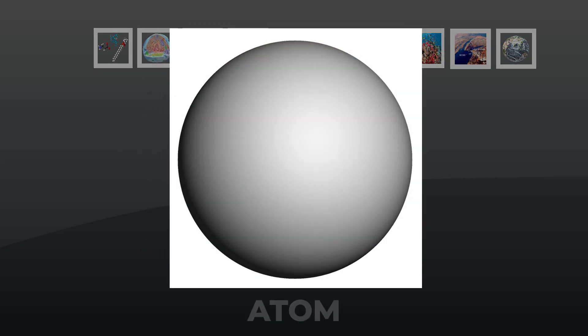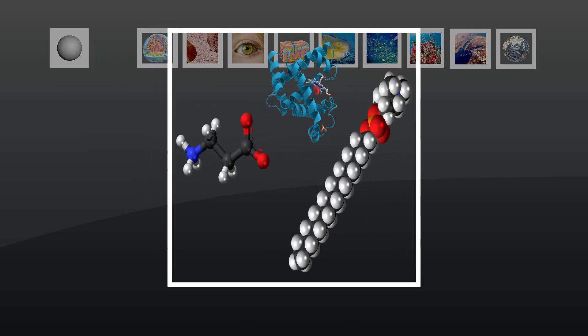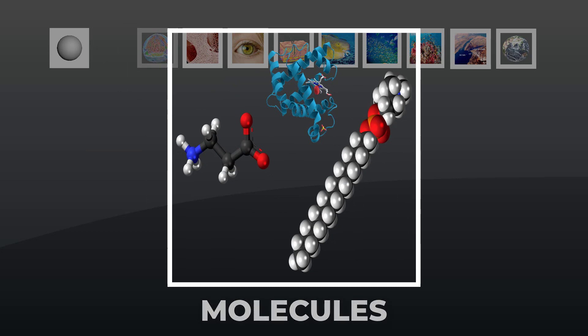An atom is the smallest unit of an element that still retains the element's properties. Electrons, protons, and neutrons are its building blocks. Two or more atoms of the same or different elements join to form molecules.